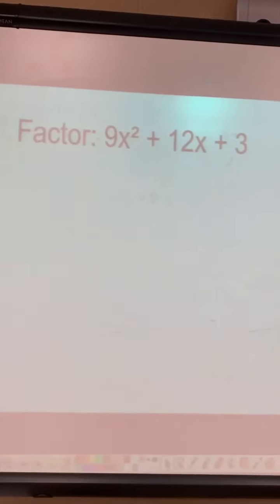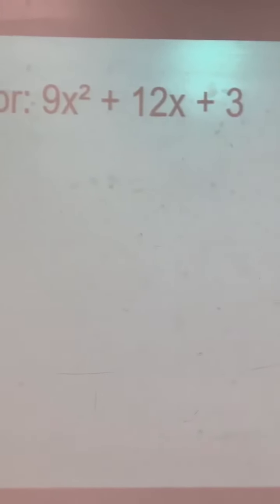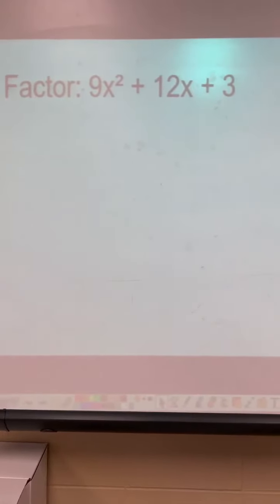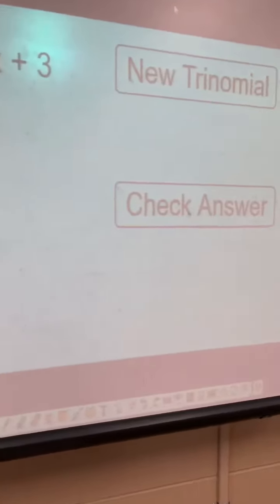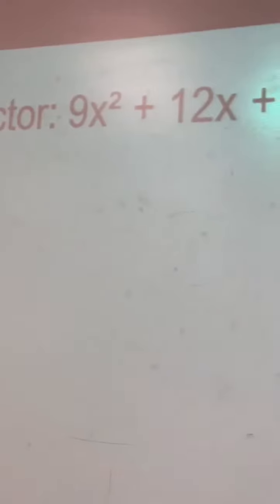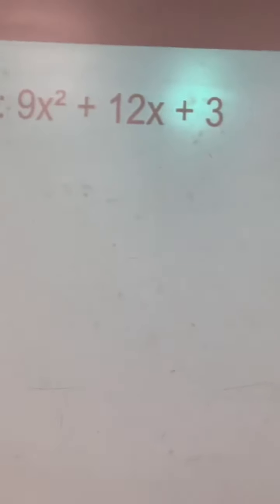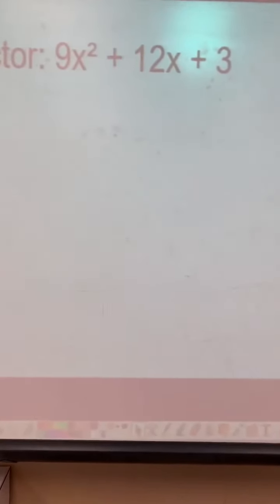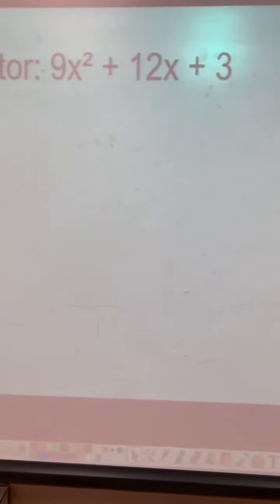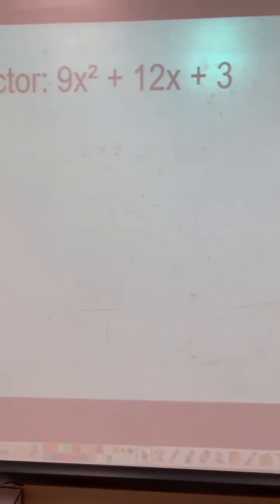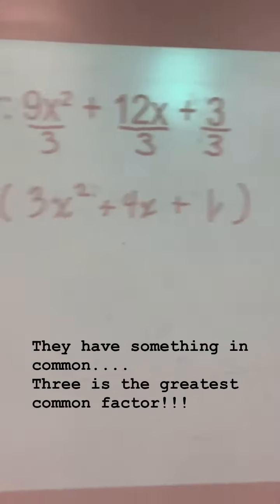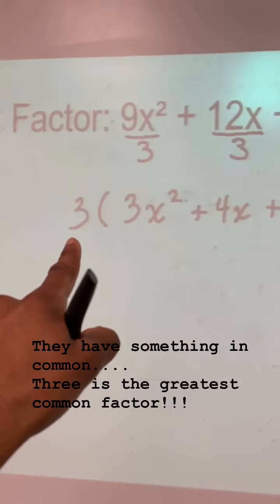So right here, I have factor 9x² + 12x + 3. If we paid attention to the last example, the first thing you want to do is pay attention to all the numbers. And if they have something in common, that's where we start with what they have in common. 9, 12, and 3, everything is divisible by 3. That's why my 3 is there.